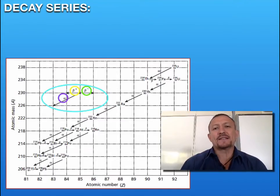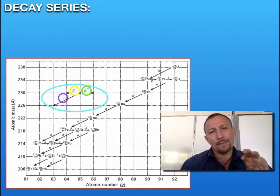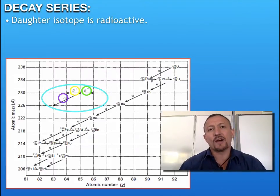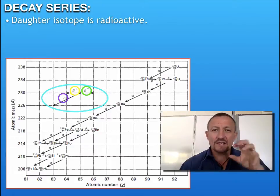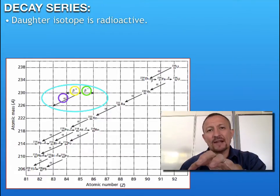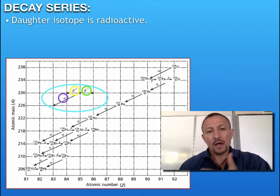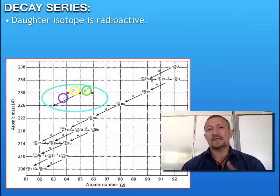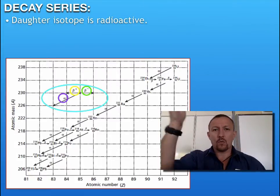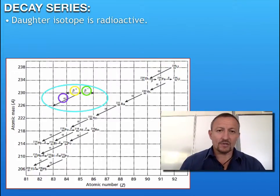What we get is a subsequent set of nuclear equations all linking together. Each daughter isotope is radioactive. Once it's produced, it will undergo radioactive decay, either releasing a positron, an electron, or an alpha particle. Your job is to utilize this decay series to say how many particles are released in the movement from one element into another.